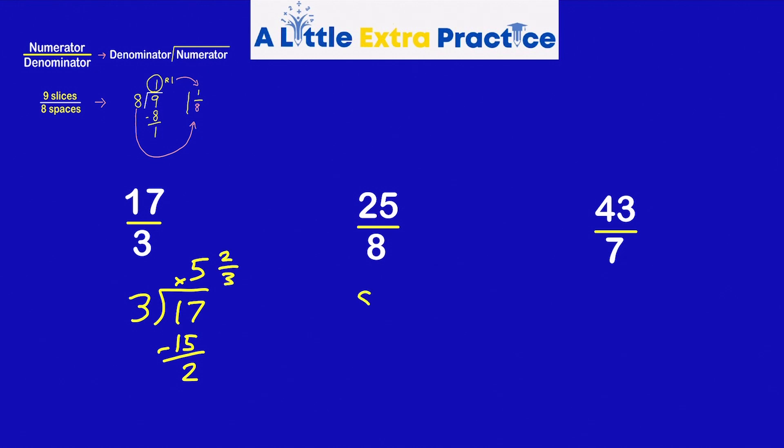Next one. 25 over 8. 8 is the divisor. 25 is the number being split up. 8 can go into 25 three times. Remainder 1 out of 8. 3 and 1 eighth.